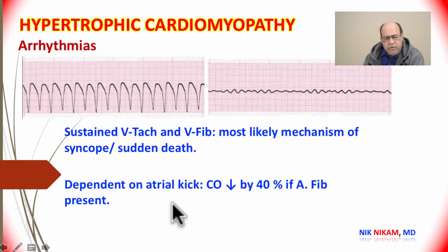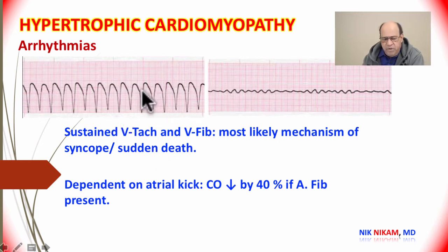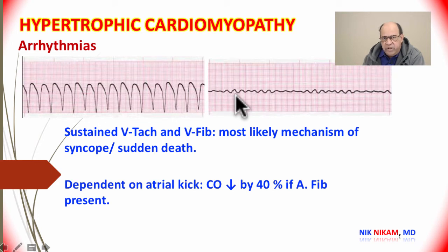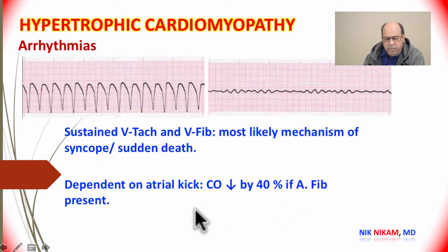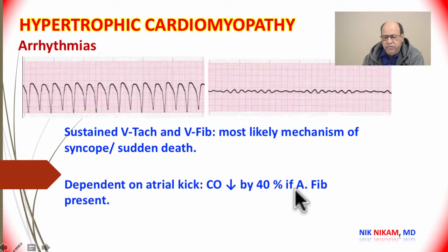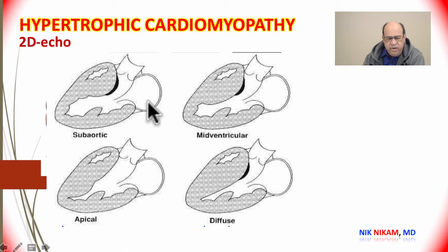Patients with hypertrophic cardiomyopathy are prone to significant ventricular arrhythmias, some of which can be fatal. The most common are ventricular tachycardia and ventricular fibrillation, which can lead to syncope and sudden death. Atrial fibrillation is also a significant problem, because in hypertrophic cardiomyopathy the atrial kick accounts for almost 40% of cardiac output, so with the development of atrial fibrillation these patients deteriorate very rapidly.